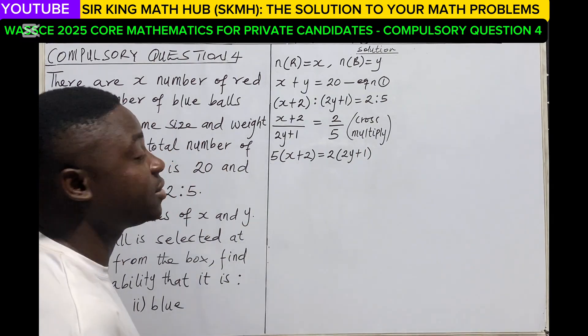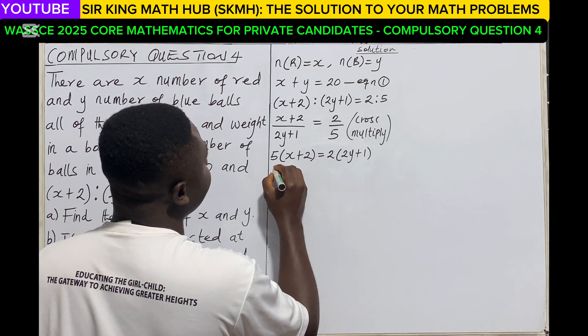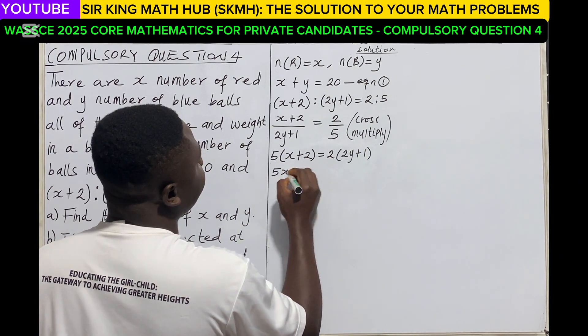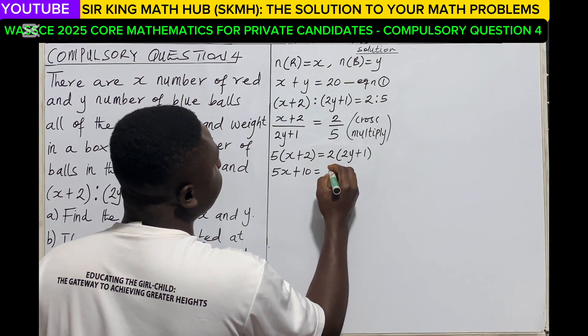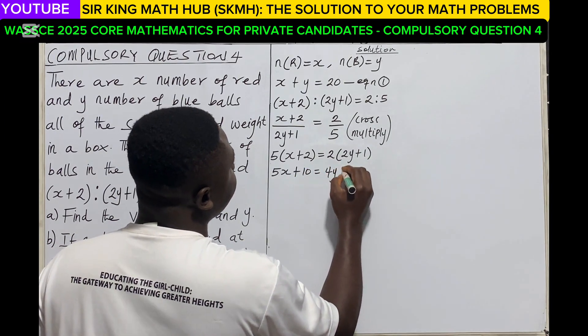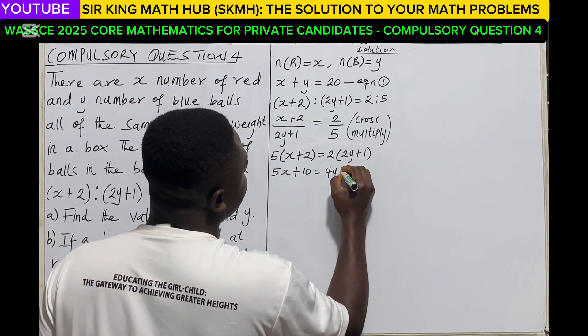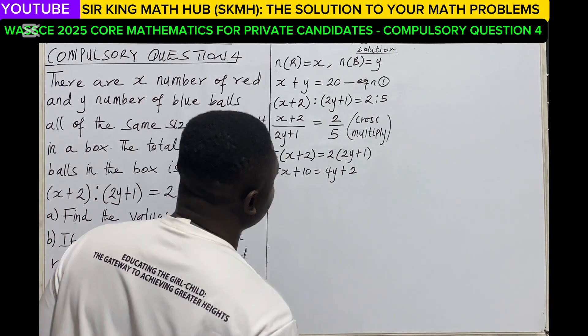So we can expand the brackets. 5 multiplied by x is 5x, 5 multiplied by 2 is 10. 2 multiplied by 2y is 4y, and then 2 multiplied by 1 is 2.